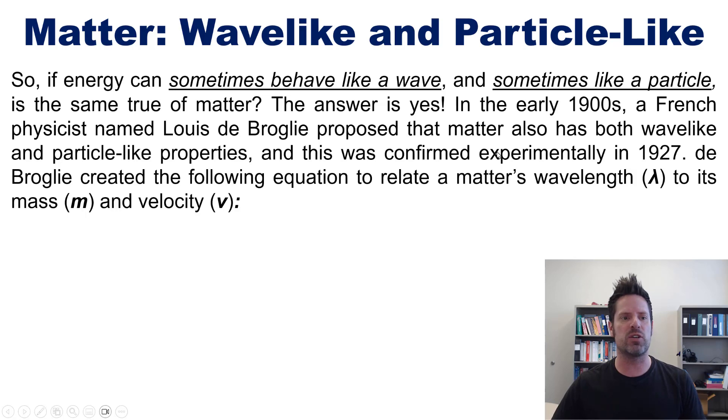In the early 1900s, a French physicist named Louis de Broglie proposed that matter also has both wave-like and particle-like properties and this was confirmed experimentally in 1927.